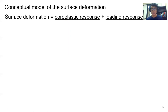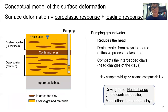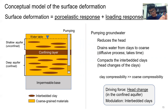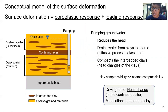The conceptual model of surface deformation in the valley shows that surface deformation can be expressed as the sum of a poroelastic response plus a loading response. The poroelastic response is due to changes in head of the aquifer. When groundwater is pumped from the deep aquifer, head in the coarse-grained materials reduces, generating a head difference between clays and coarse-grained materials. Water drains from clays to coarse materials in a diffusive process, compacting the interbedded clays and resulting in surface deformation measurable by InSAR. Clays compact more due to their larger compressibility compared to coarse-grained materials.